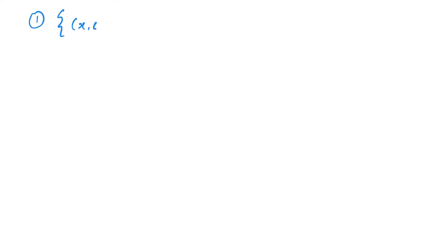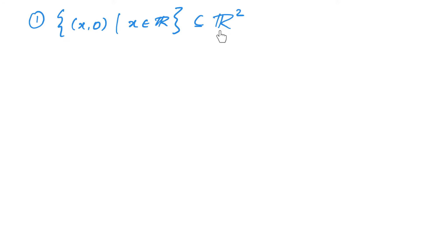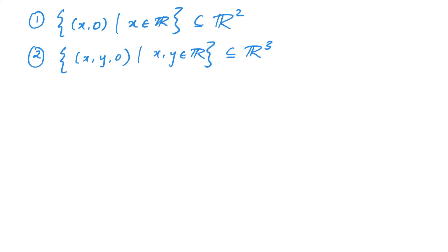Let us look at some examples. The simplest example would be the set of all (x, 0) such that x belongs to R, which is a subset of the vector space R² and is a subspace. At this point, maybe you should pause and think about what are all subspaces of R². In fact, you have a very similar question in the assignment as well, so pause and ponder over this question. Similarly, the set of all (x, y, 0) such that (x, y) belongs to R, which is a subset of R³, is also a subspace.